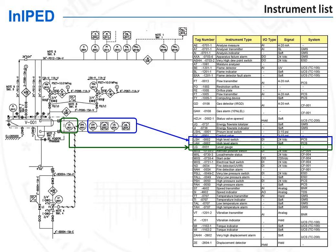The instrument engineer's first task is to produce the list of all instruments specified by process on the P&IDs. This forms the instruments list or instruments database, which is a central document for the instrumentation and automation discipline. It will list all the field instruments required to be specified, as well as all the list of IOs — input and output — for the systems, and will also give the capacity of these systems.